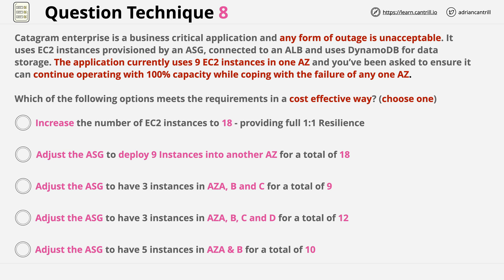Answer 1 proposes to increase the number of EC2 instances to 18, providing full one-to-one resilience. Now this is wrong — it mentions nothing about changing the number of availability zones. The question says the current instances are all in one availability zone, and without changing this it stays the same. If this one availability zone fails, then all of the instances within it also fail. This answer is the most expensive to implement and doesn't meet the question requirements.